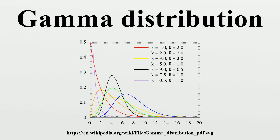Generating gamma distributed random variables: suppose we wish to generate random variables from Gamma(n + δ, 1), where n is a non-negative integer and 0 < δ < 1. Using the fact that a gamma distribution is equivalent to an exponential distribution in certain cases, and noting the method of generating exponential variables, if U is uniformly distributed, then −ln(U) is gamma distributed. Using the additivity property of the gamma distribution and expanding this result, where U_k are all uniformly distributed and 0 < δ < 1, the additivity property is applied once more. Random generation of gamma variates is discussed in detail by Devroye, noting that none are uniformly fast for all shape parameters.